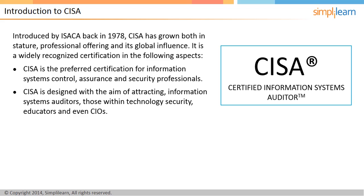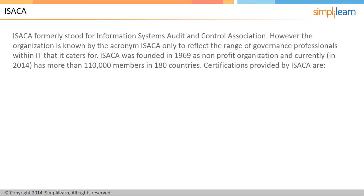The acronym ISACA formally stood for Information Systems Audit and Control Association. However, the organization is now known by the acronym ISACA only, to reflect the range of governance professionals within IT that it caters for. ISACA was founded in 1969, and over the years it has grown to have over 110,000 members in 180 countries as of 2014. You too can become a member of ISACA by registering on their website, www.isaca.org.